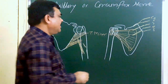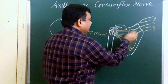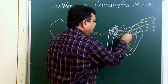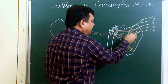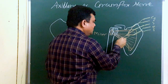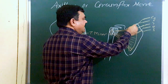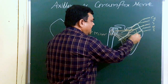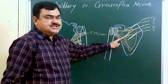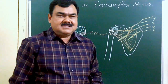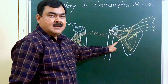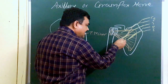These three trunks divide into ventral and dorsal divisions. The dorsal divisions of all three trunks join to form the posterior cord. Here is the lateral cord and the medial cord. The posterior cord gives five branches: upper subscapular, lower subscapular, thoracodorsal, radial, and axillary.